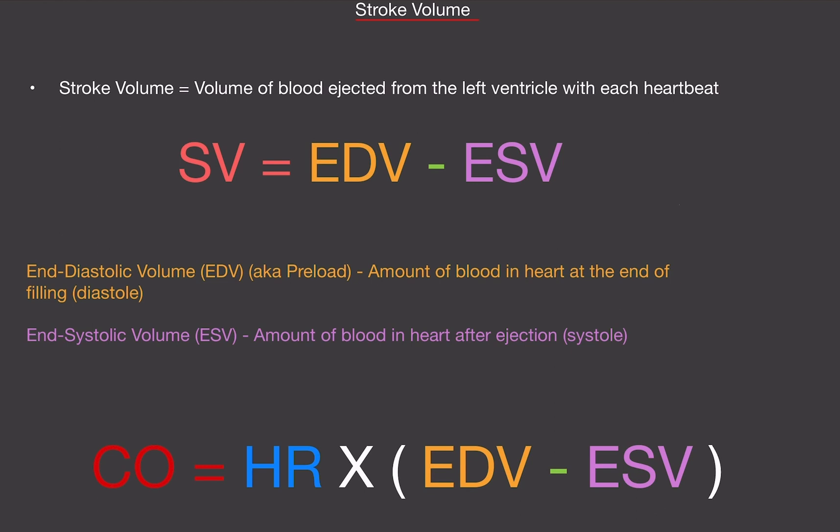The end-systolic volume or ESV is the amount of blood in the heart after ejection or systole. So after we're done contracting the ventricles, how much blood is remaining in that compartment, in the left ventricle? Please do not be mistaken. When the left ventricle contracts, not all the blood is actually able to leave the chamber. It's physically not possible.